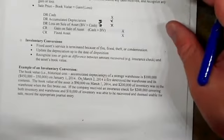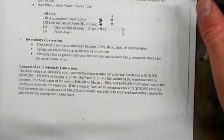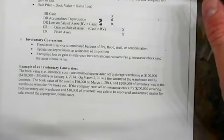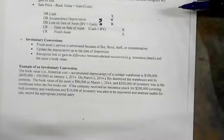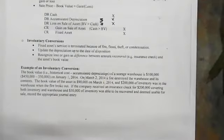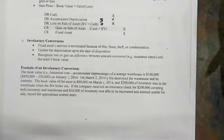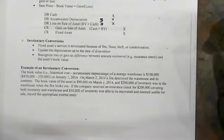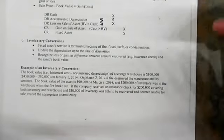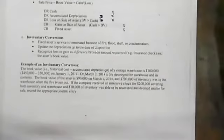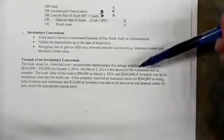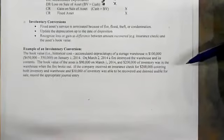Sometimes we have what we call an involuntary conversion — when something happens like fire, theft, or flood. We update depreciation to the day of disposition and recognize a gain or loss between the assets that were destroyed and any amount recovered. For example, the book value of a storage warehouse is $100,000 at the beginning of the year.